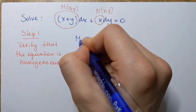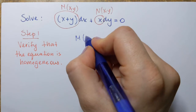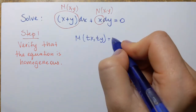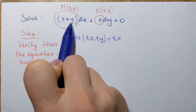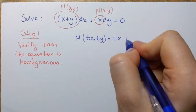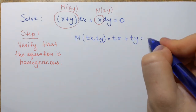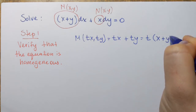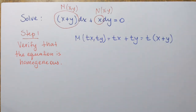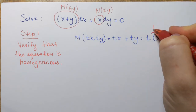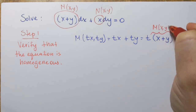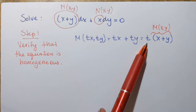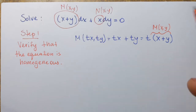To check if M of x,y is homogeneous, we look at M of tx, ty. Plugging in tx for x we get tx, and replacing y with ty we get ty. We can see that t can be factored out, leaving x + y inside the parentheses, which is the original function M of x,y. So that confirms that this function is homogeneous and its degree is the power of t, which is 1.